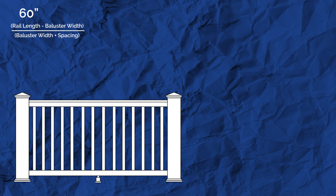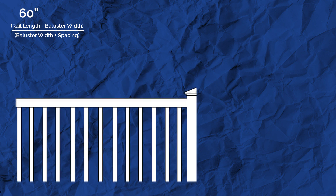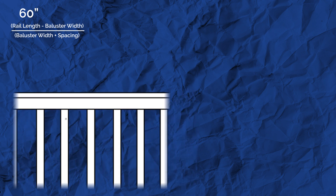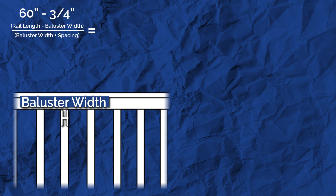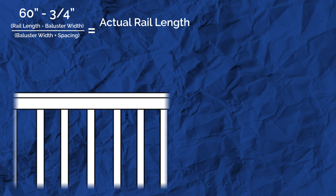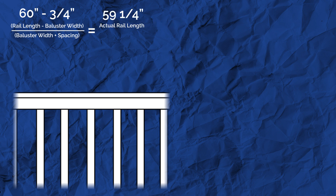From the total rail length, subtract the width of one baluster. We take off this space because there will always be one more baluster than there are spaces in the section. In our model, we're installing a standard three-quarter inch baluster, which gives us an actual rail length of 59 and a quarter inches.